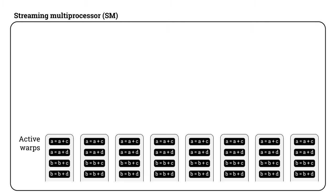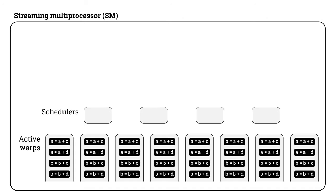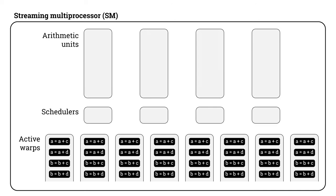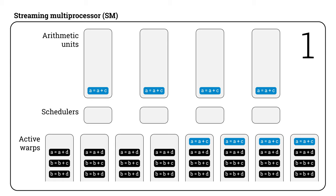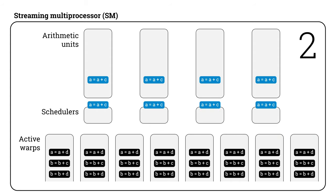In each SM there are four schedulers that can take instructions from active warps and put them to arithmetic units. For each scheduler there is one arithmetic unit that can do 32-wide arithmetic operations. Assume that in the beginning the first instruction of each warp is ready for execution — all threads know the current values of A and C. In the first clock cycle, each scheduler can find an active warp with an instruction ready to be executed, so the instructions go to the arithmetic units. In the next clock cycle, each scheduler can again find an active warp, so we can again put four instructions to the arithmetic units.